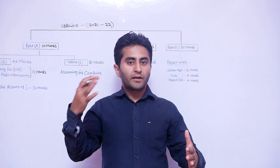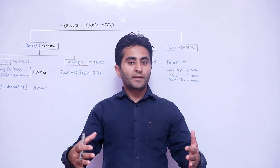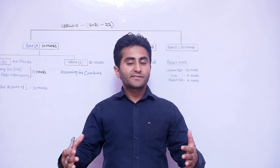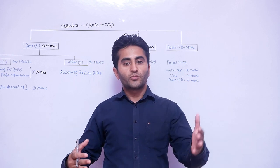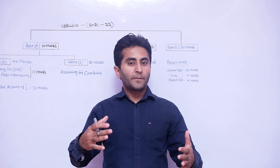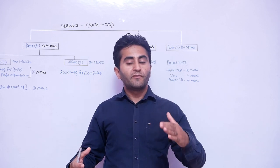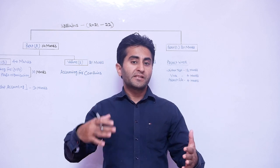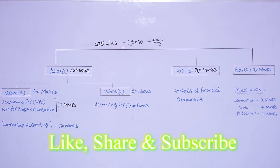Hi guys, welcome to Golden Eye. Today we are discussing the 12th class CBSE accountancy syllabus for the year 2021-2022: what are the chapters under the syllabus, which chapters will have which topics, and what weightage will each topic have. As per the syllabus 2021-2022, your complete syllabus is divided into three parts: Part A, Part B, and Part C.